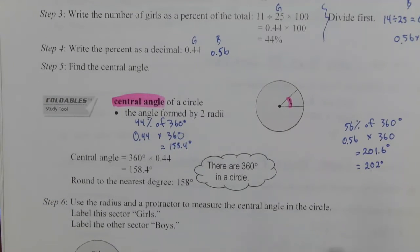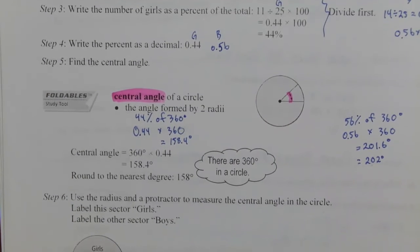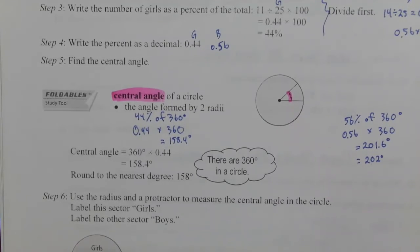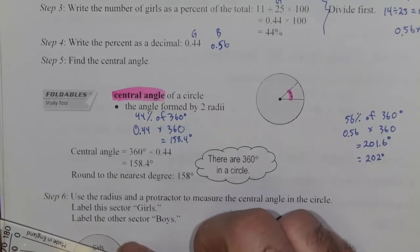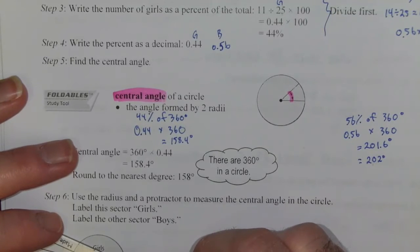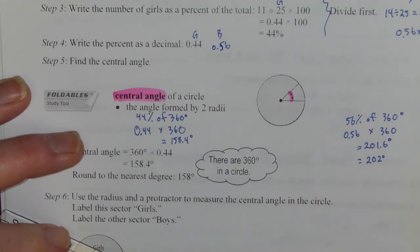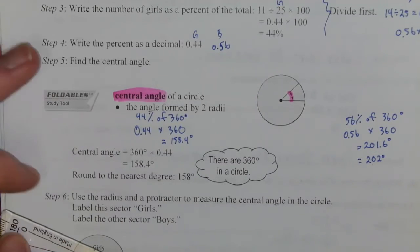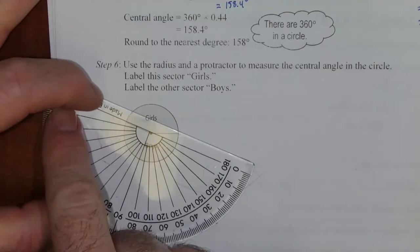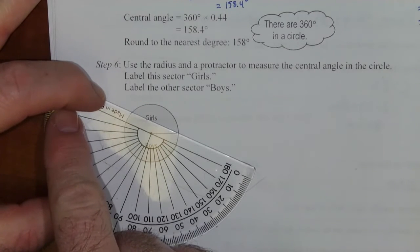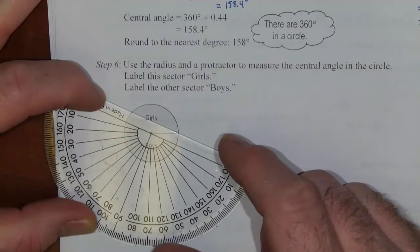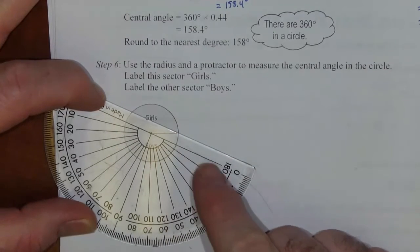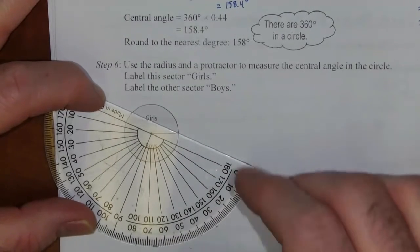So now you can use a protractor to find your angle. So the way I've got this set up right now is for the boys we're looking at 202 degrees, so you start down here. And you're not going to get there because 202 is greater than 180.